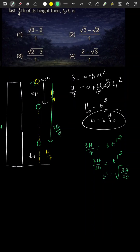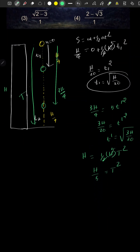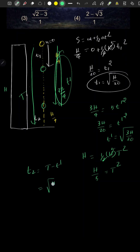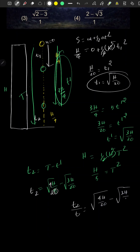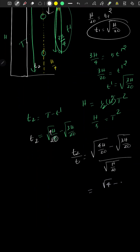If we drop the ball, the total height to ground takes total time capital T. Using the same formula one more time for full falling motion, h = 5T². Now, t_dash = t2 - t1 = √(4h/20) - √(3h/20) divided by √(h/20), which gives √4 - √3 over 1, equal to 2 - √3. So that would be the answer.